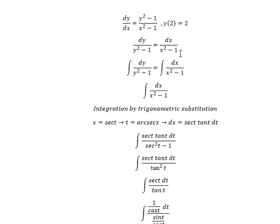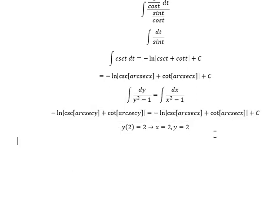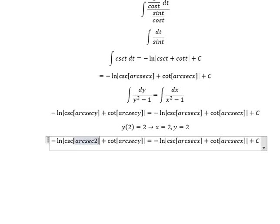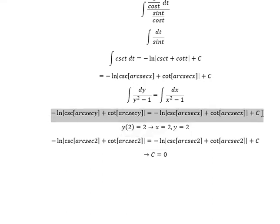Next, we have conditions. That means when s equals to number 2, y equals to number 2. So I will put number 2 for y and s. And if we simplify, we see that c equals to number 0. So we just put number 0 here.